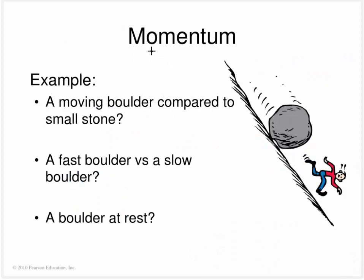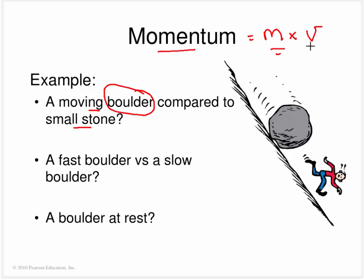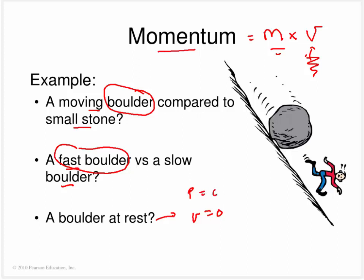Conceptually, consider a moving boulder compared to a small stone moving at the same speed — the boulder has more momentum because momentum equals mass times velocity and the boulder is far more massive. A faster boulder has more momentum than a slower boulder because the velocity term is larger. A boulder at rest has a speed of zero, so its momentum is also zero kilogram meters per second.